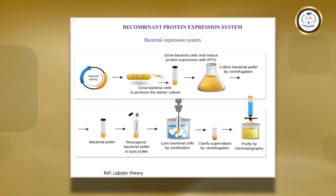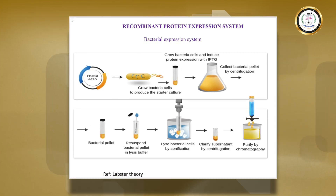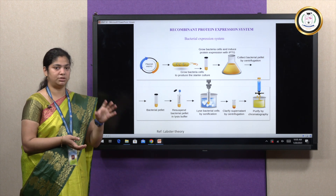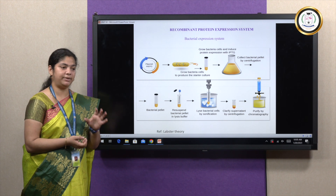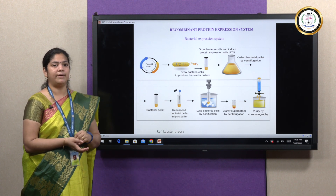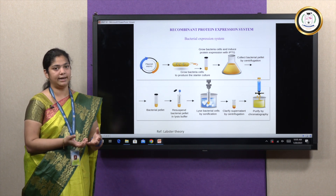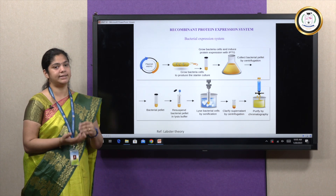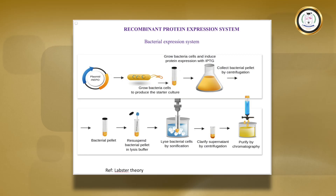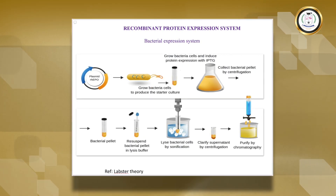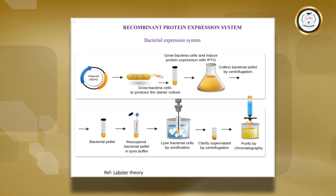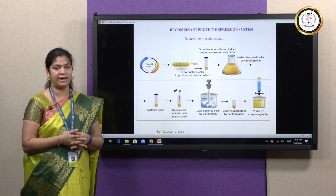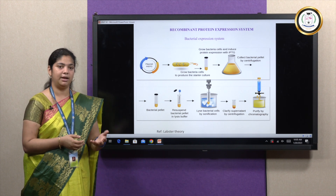Our aim is to obtain higher amounts of recombinant protein, where the expression system plays a major role. There are many expression systems, and the host is very important. Hosts include bacteria, yeast, insect cells, or mammalian cells. For large-scale isolation of a recombinant protein — for example, insulin for treatment of diabetes — a large-scale method is needed.